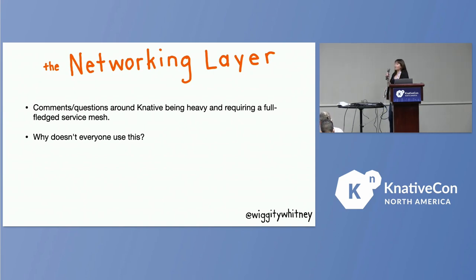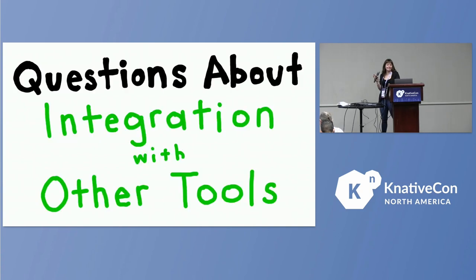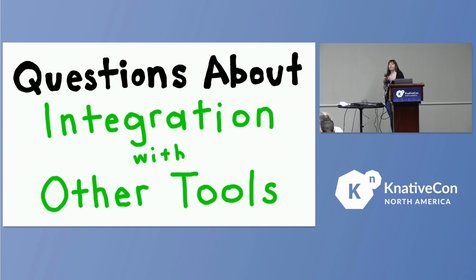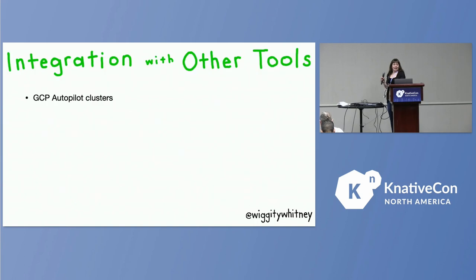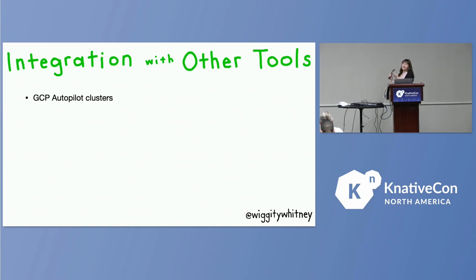That segues perfectly into my next set of questions about integrations with other tools. Instead of reciting the questions, I'll simply name all the tools people are asking about in the context of working with Knative. First, GCP Autopilot clusters. I'm a relatively new learner myself, so I'm not going to assume you know any of these — pardon me if I'm repeating something obvious. Autopilot gives you a cluster sized exactly for the workload that's running, so Autopilot would have to create a node to run a workload.